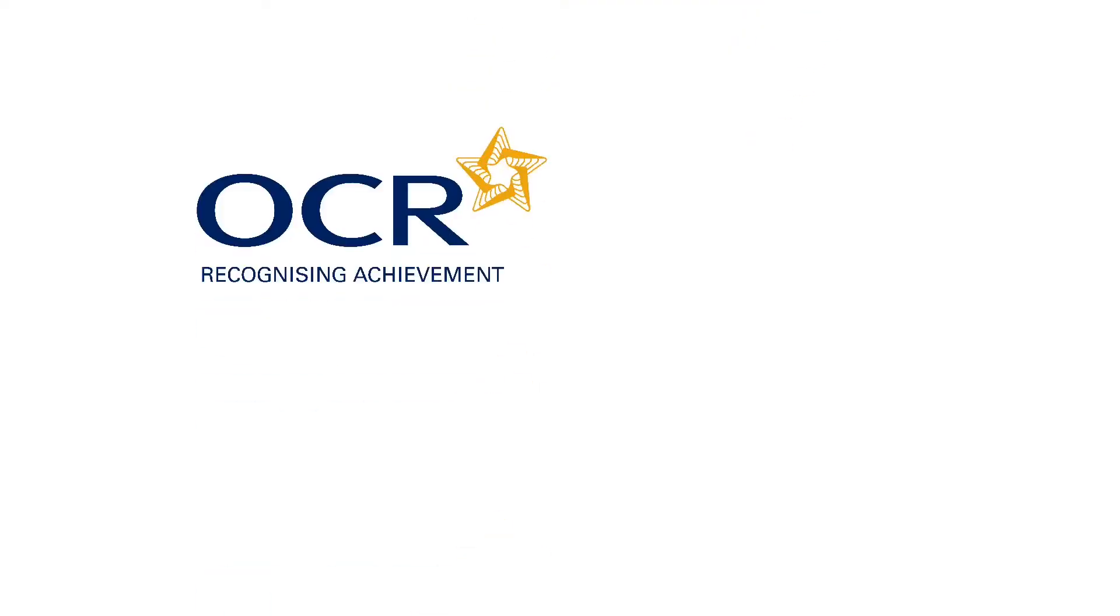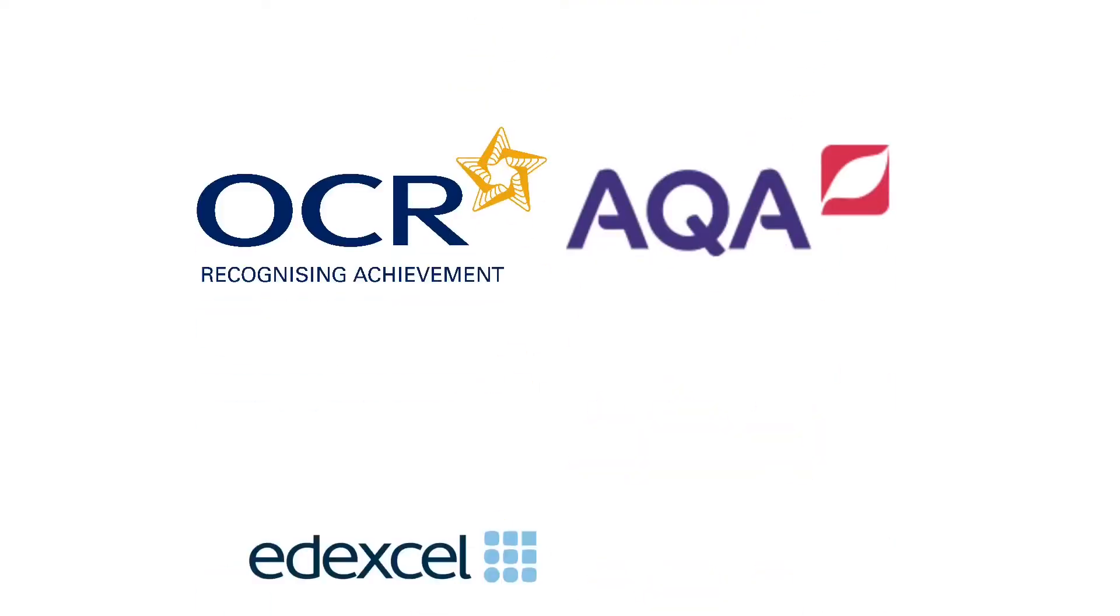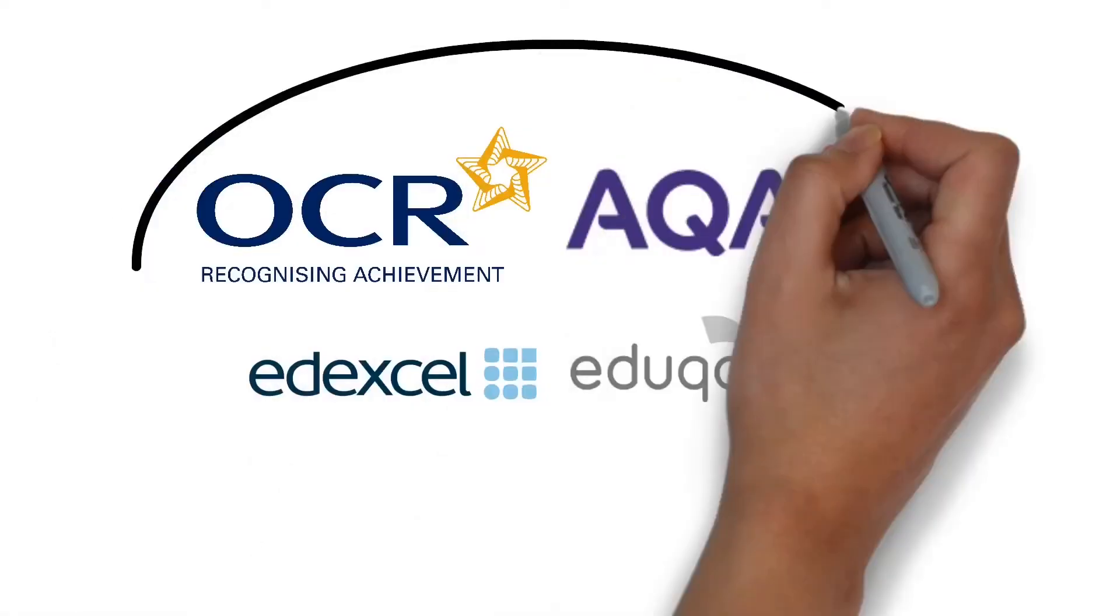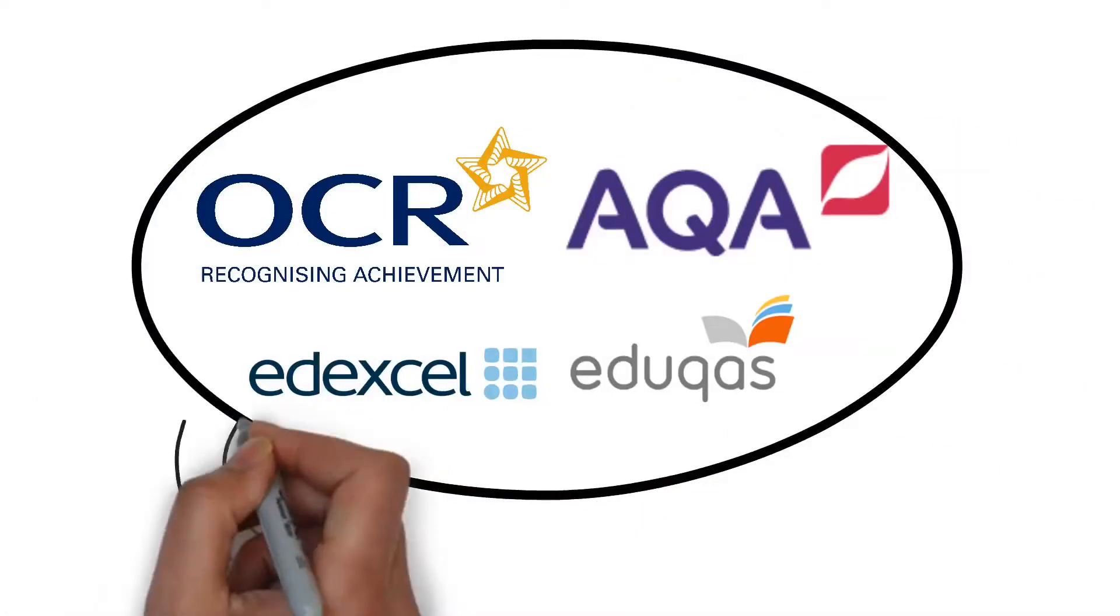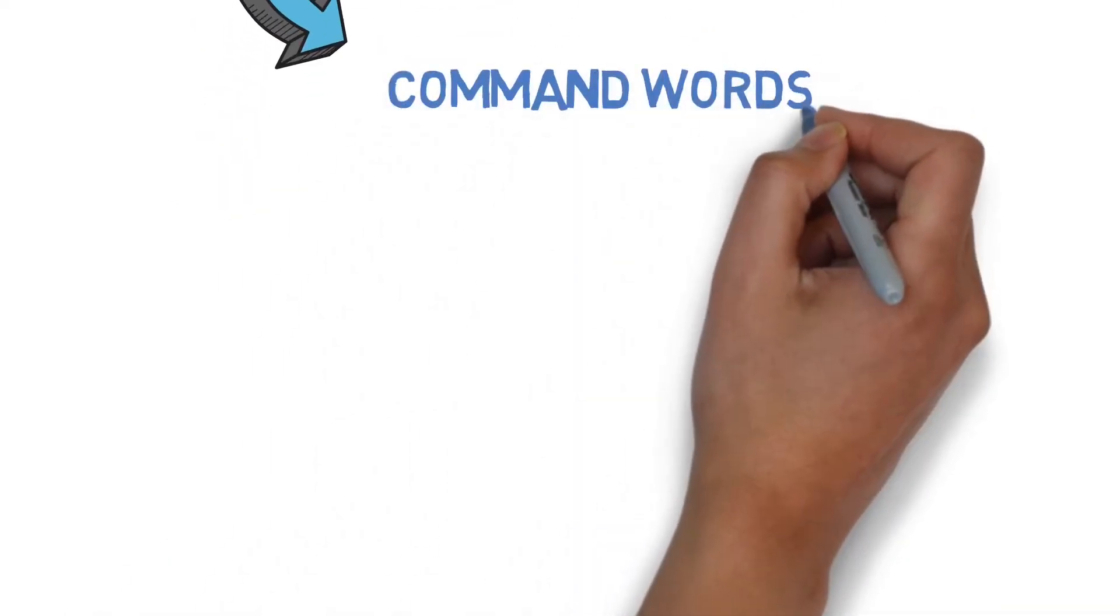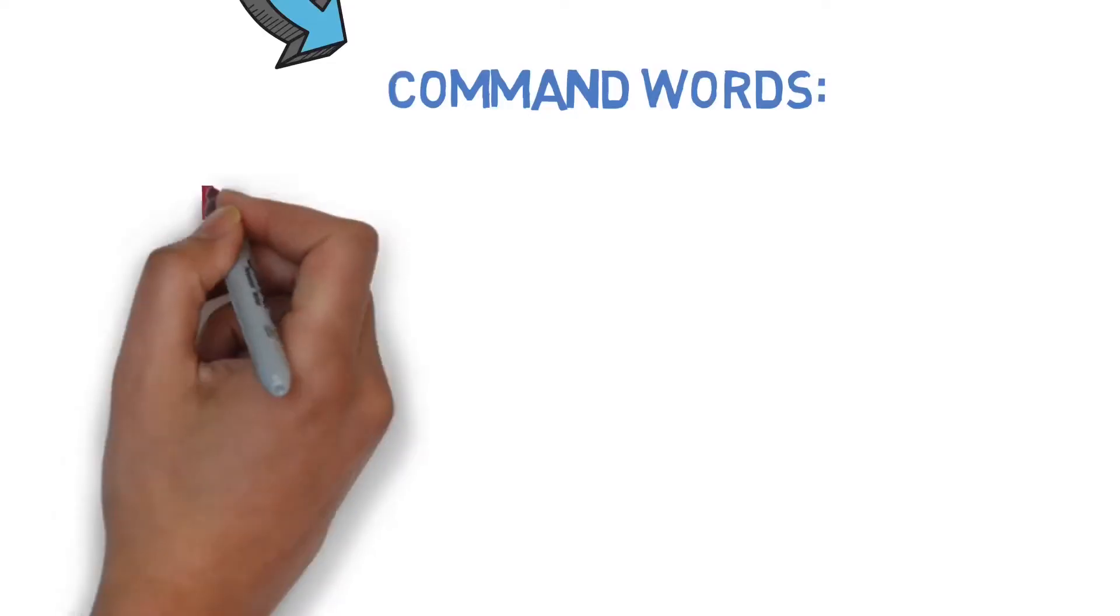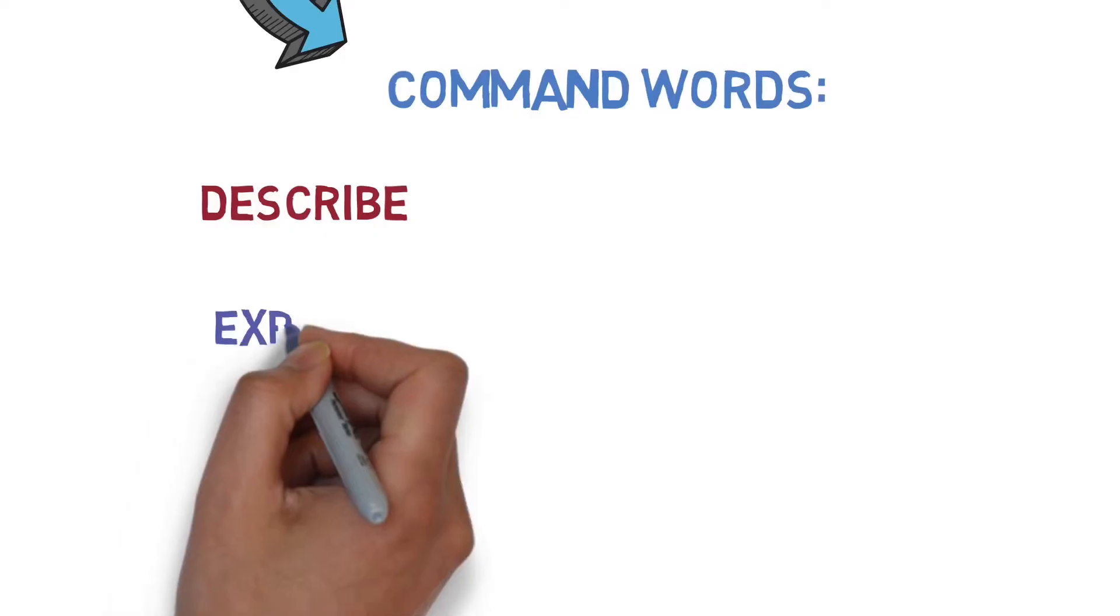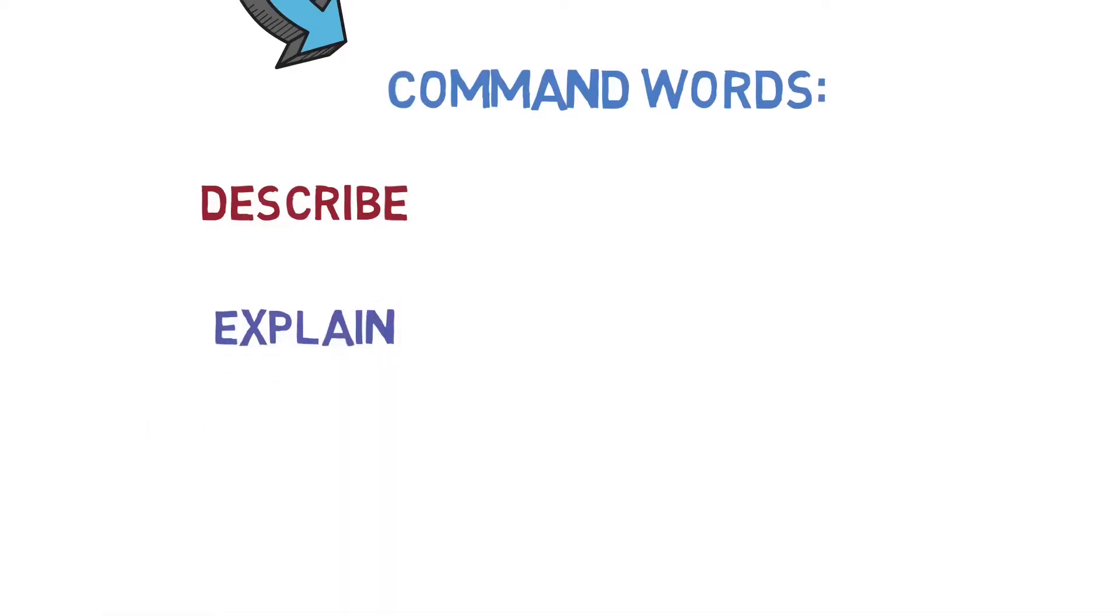The first thing that you've got to know is that the exam boards all publish on their website a list of key command words that form the basis of the questions that are going to be in the exam paper. Now for the six mark questions, these questions usually begin with words like describe, explain, evaluate, compare features.